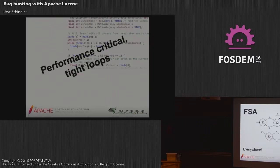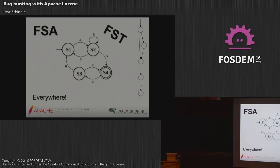The second thing is that Lucene's term index is mostly based on structures like finite state automatons and finite state transducers — you might know those from how regular expressions are internally implemented. When you're looking up a term, you go through the state machine. Those FSTs are very, very large. Together with all those loops, there's a lot for HotSpot to optimize, and it does it really, really well.